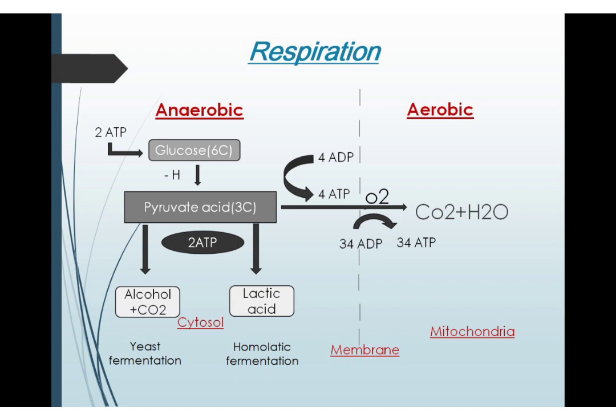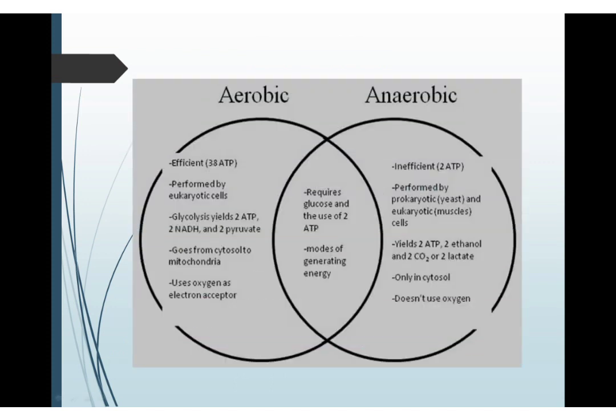Anaerobic respiration occurs during strenuous exercise when your body needs energy at a faster rate. To get this energy in the form of ATP, the pyruvate molecule follows an anaerobic pathway which is much quicker. Aerobic respiration releases 38 ATP while anaerobic respiration releases only 2 ATP, which is quite inefficient. However, anaerobic respiration only occurs in the cytosol, so it requires fewer steps and less time to compensate for the required energy. In this way, your muscle cells or liver cells respire anaerobically whenever there is a quicker need of energy.